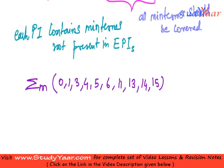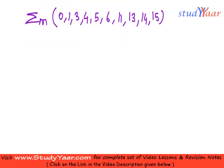So, first I am going to write them in min-term notation. What is my min-term notation? Let's see. I have my 0, 1, 3, 4, 5, 6, 11, 13, 14, and 15.